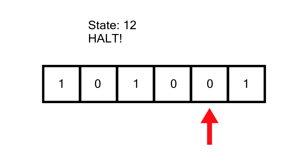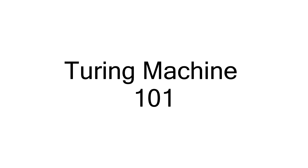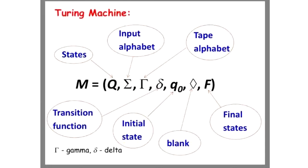What is left on the tape is the answer to our initial problem. Now I'm going to show you a more detailed explanation on the Turing machine. There are 7 tuples in a Turing machine.